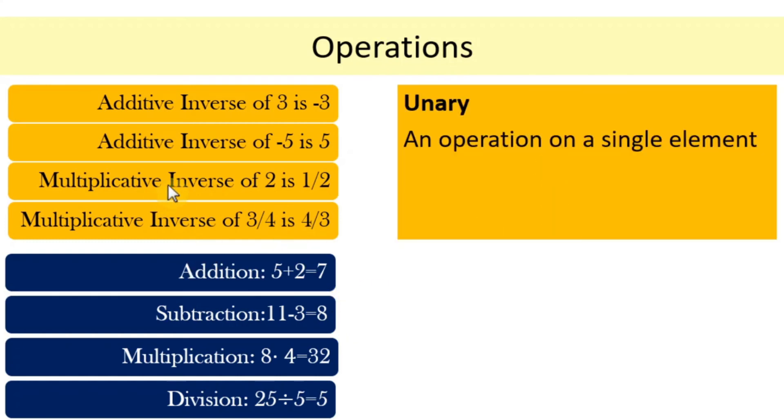Let us go back with our additive inverses and multiplicative inverses. These operations are examples of a unary operation because these are operations that are applied to a single number and can yield another number. For example, additive inverse is applied to a single number 3 and the result is -3. Multiplicative inverse is applied to a single number 2 and the result is 1/2. These operations, additive inverse and multiplicative inverse, are called unary operations.